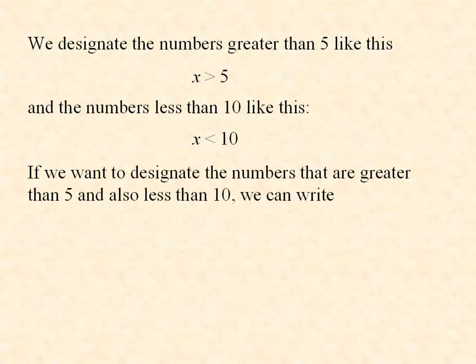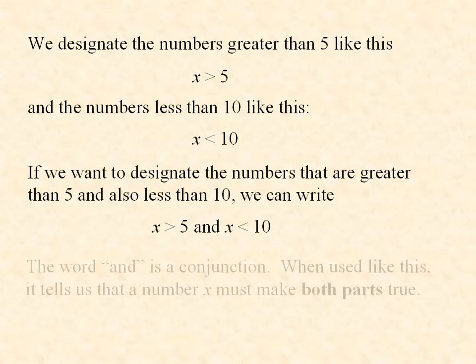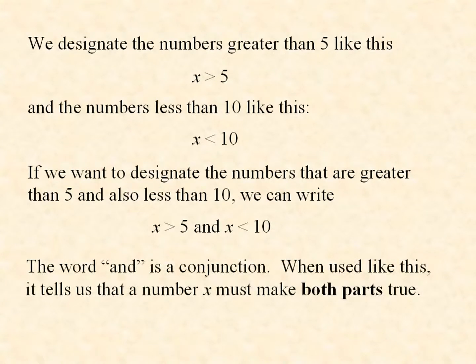If we want to designate the numbers that are greater than 5 and also less than 10, we can write x > 5 and x < 10. The word and is a conjunction. When used like this, it tells us that a number x must make both parts true.